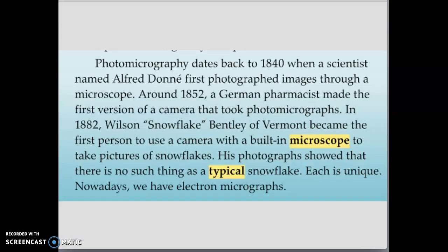All right, so let's read this short little paragraph from the passage that we've been reading all week. So it says photomicrography dates back to 1840 when a scientist named Alfred Donay first photographed images through a microscope. Around 1852 a German pharmacist made the first version of the camera that took photomicrographs. In 1882 Wilson Snowflake Bentley of Vermont became the first person to use a camera with a built-in microscope to take pictures of snowflakes. His photographs showed that there is no such thing as a typical snowflake. Each is unique. Nowadays we have electron micrographs. So here is our word that we are trying to figure out what the opposite is. The word is unique and you know that unique means special. It's one of a kind. Now if something is unique what would be the opposite of unique?